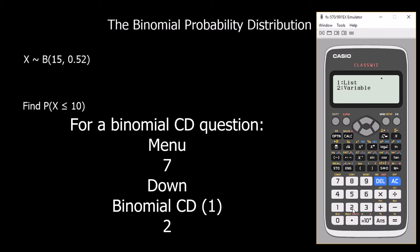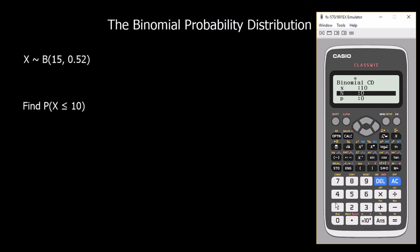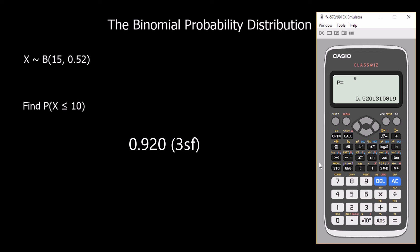We select variables — number two. X is the number we're looking at, which is 10 — everything up to and including 10 cumulatively. N is the number of trials, which is 15. P, the chance of success each time, is 0.52. Click equals and equals again, and the answer is 0.920 to three significant figures. If we wanted the chance of 11 or more, we could do 1 minus this answer.